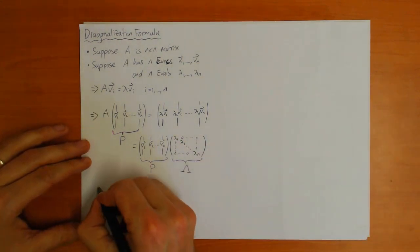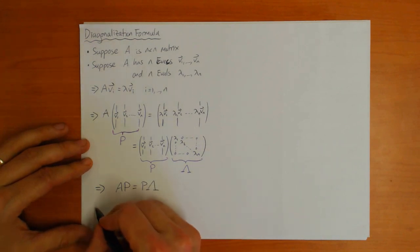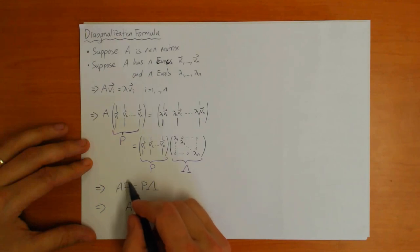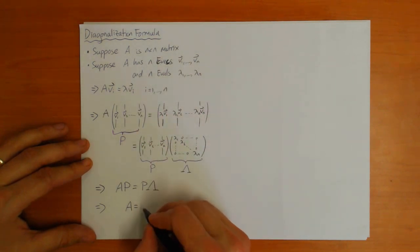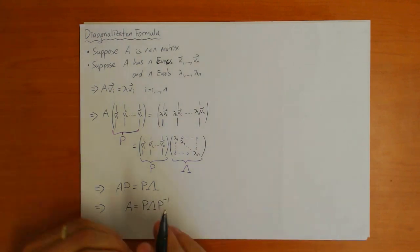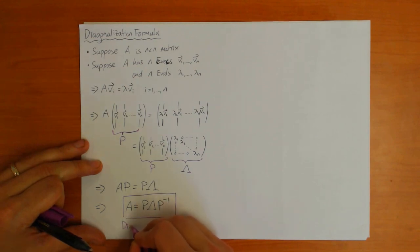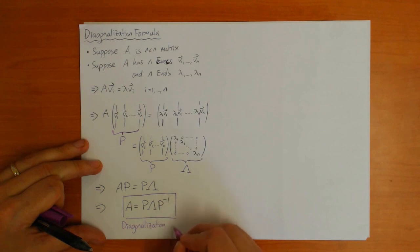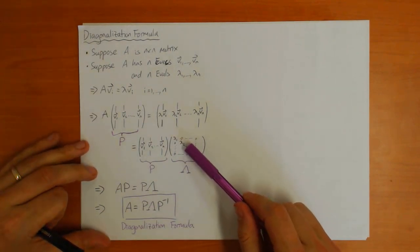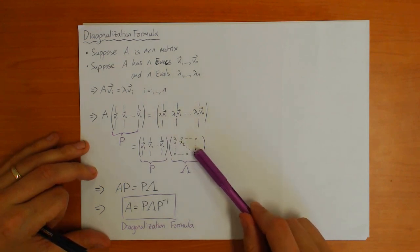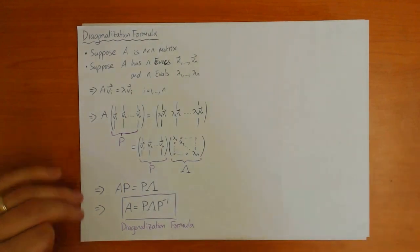With these definitions, you can write the equation as A times P equals P times lambda. Multiplying both sides on the right by the inverse of P — and P is always invertible when A has n eigenvectors — you get A equals P lambda P inverse. This is the diagonalization formula. It's called that because lambda is a diagonal matrix, with only non-zero entries on the diagonal, and you're writing A in terms of this diagonal matrix.